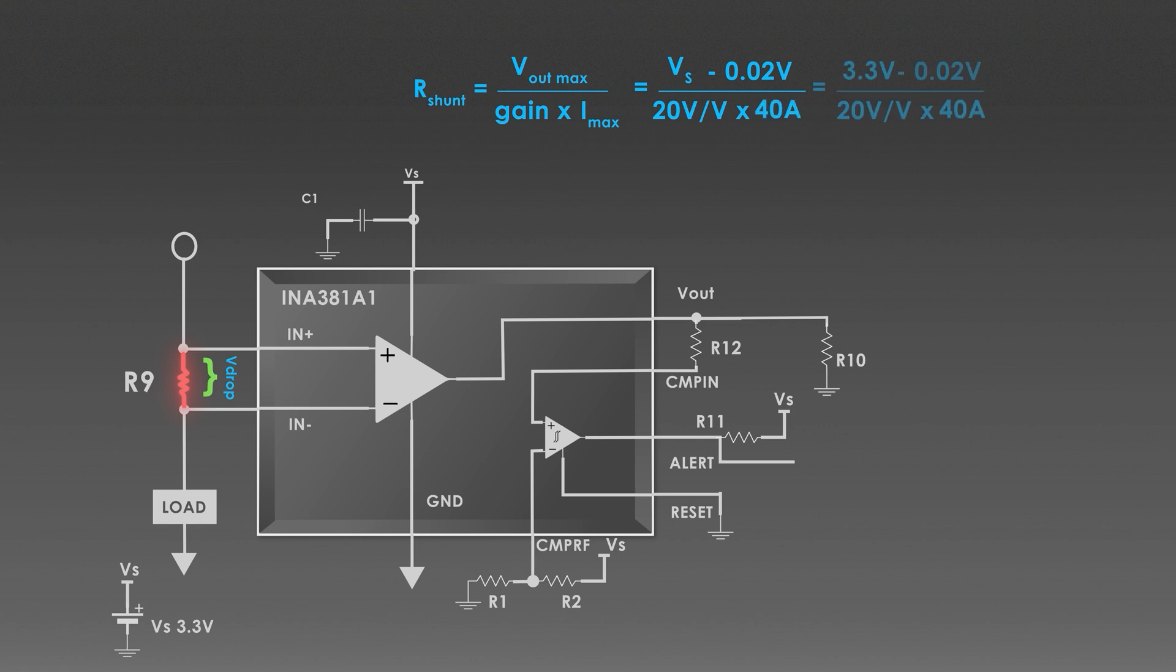Hence, we easily get the value of the sense resistor, which is around 4 milliohms. It gives a small voltage drop without excessive power loss. We should always use a high-power rated low-value resistor to avoid heating issues.